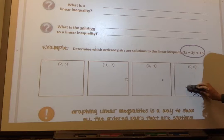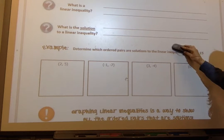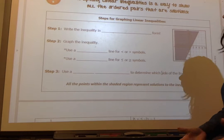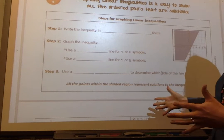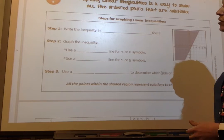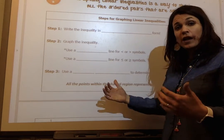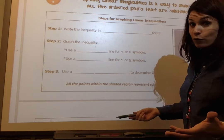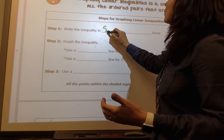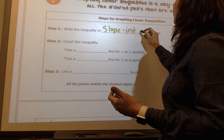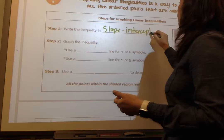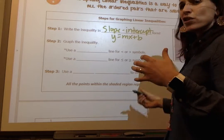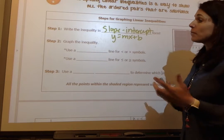Now let's talk about the steps to graphing a linear inequality. So if we go down in our notes, graphing linear inequalities is a way to solve all the ordered pairs that are solutions. And so in your notes, we have three easy steps that if you follow, you should be okay. In step 1, we're going to write the inequality in, what form do we always use? Slope-intercept to graph. And remember, slope-intercept form is y equals mx plus b. So we're still going to get y by itself.